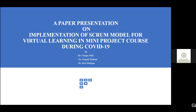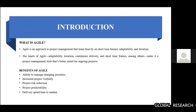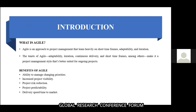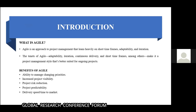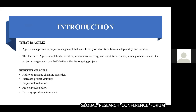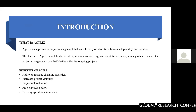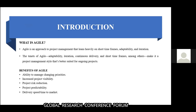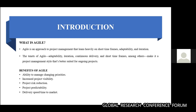So what is Agile? Agile is an approach to project management that leans heavily on short timeframes, adaptability, and iterative iterations. There are many benefits of Agile. Using Agile, we can manage changing priorities in our project. It also increases project visibility, reduces project risk at any stage, increases project predictability, and increases delivery speed.